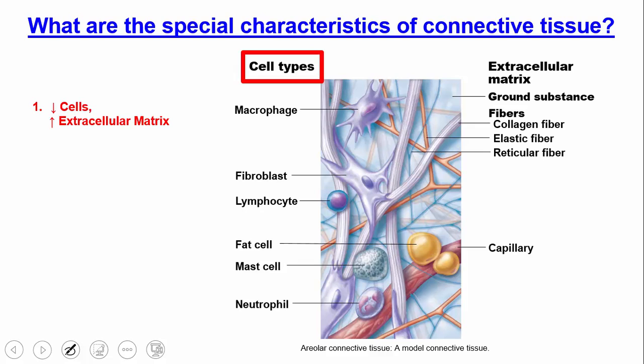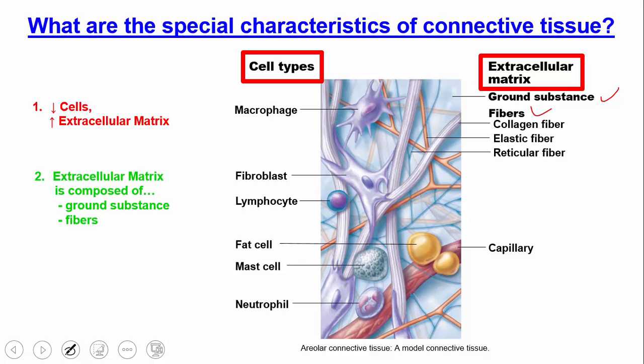These are the cell types that you could have — we'll talk about the functions of those different cells as we proceed. The extracellular matrix is composed of something called the ground substance and something called a fiber. That's the second characteristic: ground substance and fiber.